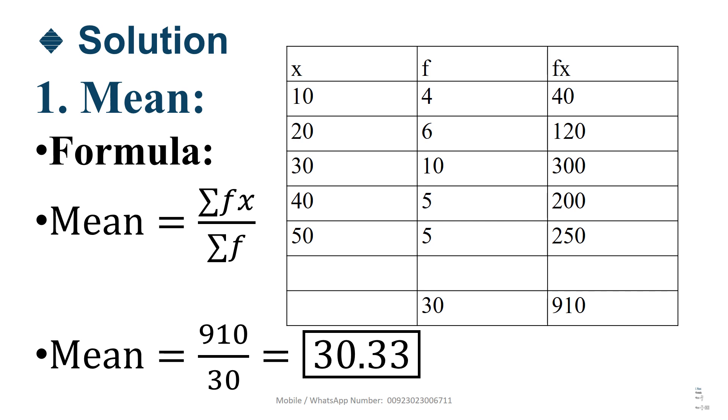Now, we add all numbers, then we get 30, and we add all numbers, then we get 910. According to mean formula, summation of f of x, 910 you write here. Divide by summation of f. Value of summation of f is 30. 910 divided by 30, we get 30.33. This is mean.